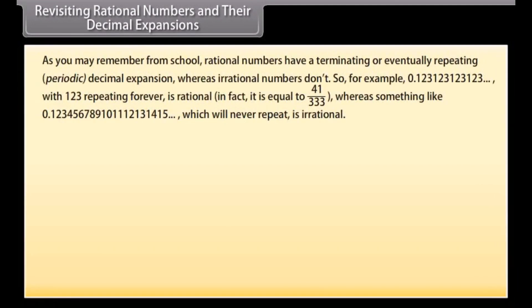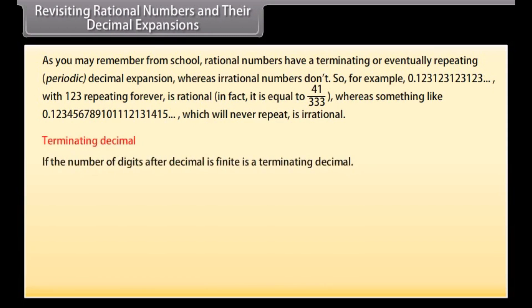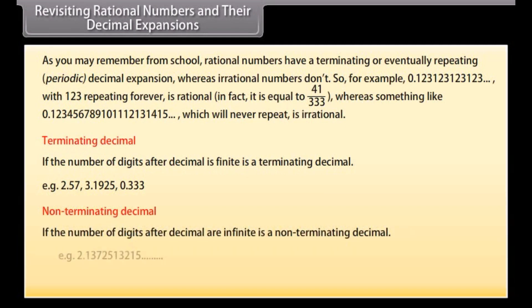Revisiting rational numbers and their decimal expansions. Rational numbers have a terminating or eventually repeating (periodic) decimal expansion, whereas irrational numbers don't. For example, 0.123123123... with 123 repeating is rational — it equals 41/333. Something like 0.123456789101112131415... which never repeats is irrational. A terminating decimal has a finite number of digits after the decimal point (e.g., 2.57, 3.1925, 0.333). A non-terminating decimal has infinitely many digits after the decimal point.